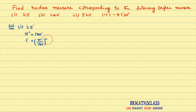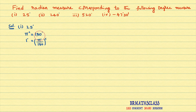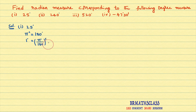Even though if we don't write the power c notation, it still indicates a radian measure. Try to understand. We are converting 25 degrees into radian measure. The important point is: π radians is 180 degrees. From this, 1 degree is π/180 radians. If you know this point — 1 degree equals π/180 radians — all these problems are going to be very easy.